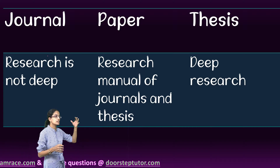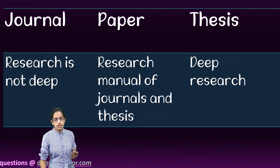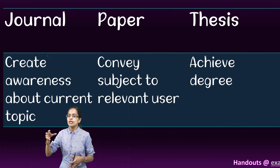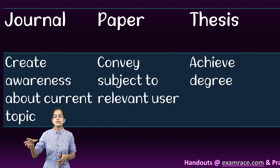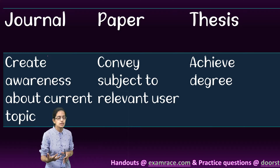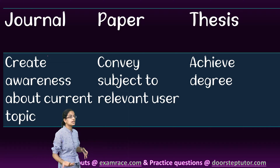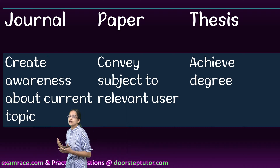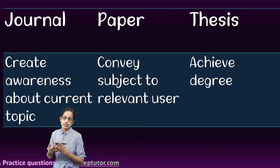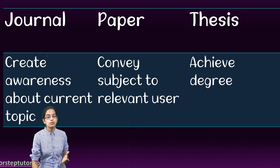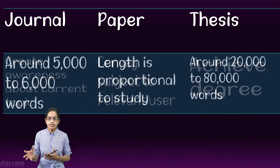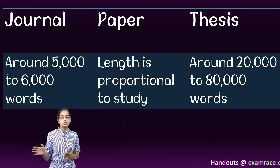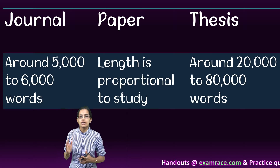A thesis is a deep research on a single topic, and the idea is to attain a degree. A journal is basically with an idea to create awareness among people, so usually contemporary issues are taken into account. For example, if it is a journal on environment, recent happenings in the environment section would be taken into account. The subject matter would be taken into account accordingly, and the papers would also have relevant subject information which could be taken into consideration.